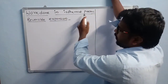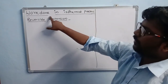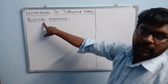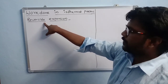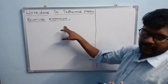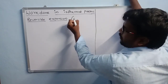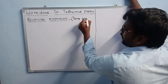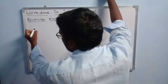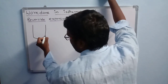Work done in isothermal reversible expansion. I will explain about work done in an isothermal process. In this isothermal process, we consider a reversible process, which takes place in steps. In expansion, the volume of gas increases. In an isothermal process, temperature remains constant, so this process takes place at constant temperature.